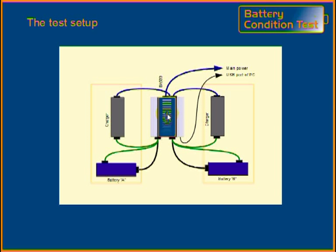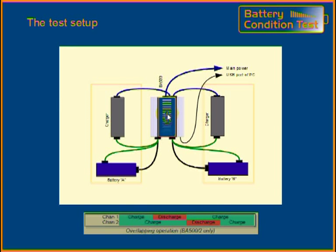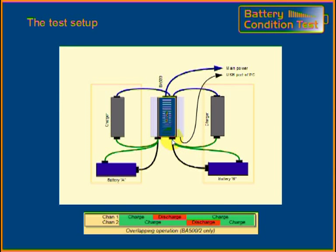This is a figure of the setup of a test system that can handle two batteries at the same time. In the center is a BA500 that has connections on the top side to the mains and to the two chargers. The two chargers are powered from the BA500 and are switched on and off under program control. The charger's output is wired through the BA500 to the battery, so that the charge current and voltages can be measured. The battery's load connection is wired to the BA500 to perform the discharge test.